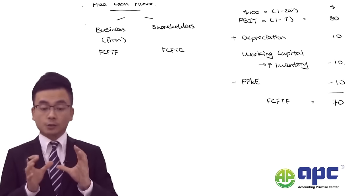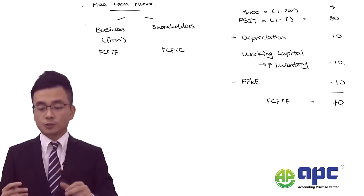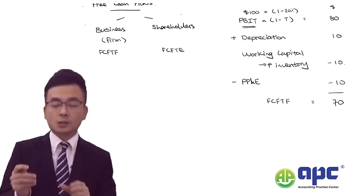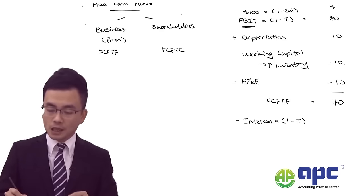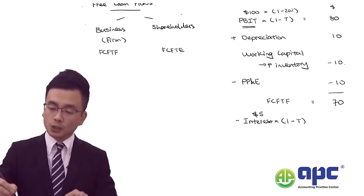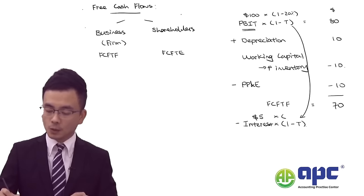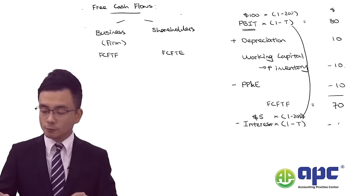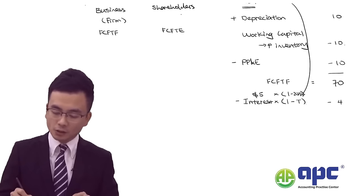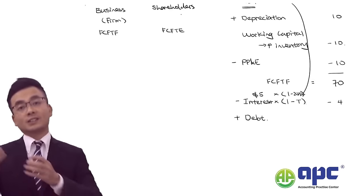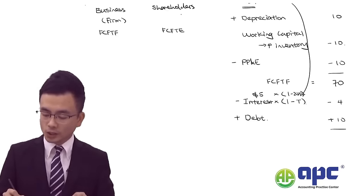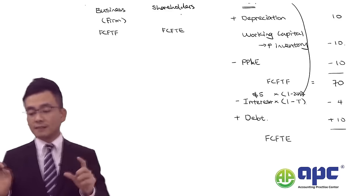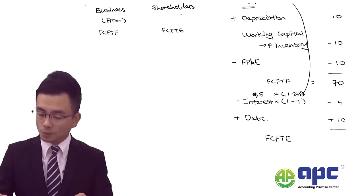To calculate free cash flow to equity (FCFE), start from FCFF and deduct interest times (1 minus tax rate) to avoid double counting. If interest expense is $5 and tax rate is 20%, we minus $4. Then consider any additional debt issued — say $10 coming into the business. So FCFE = 70 − 4 + 10 = $76.